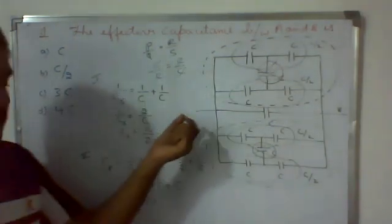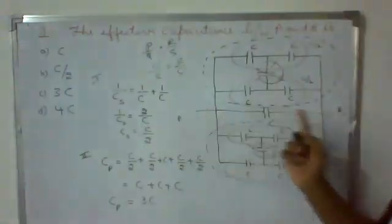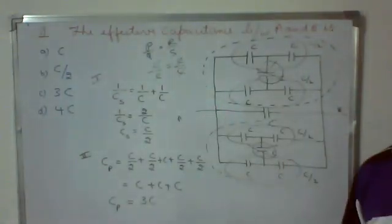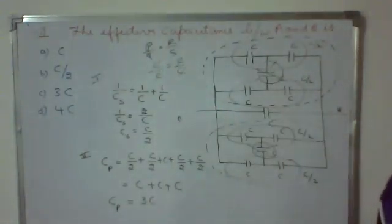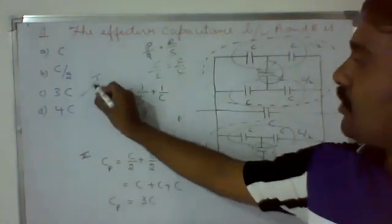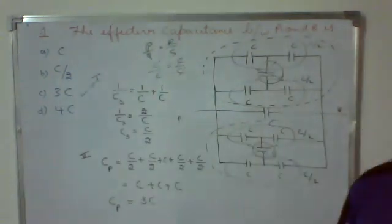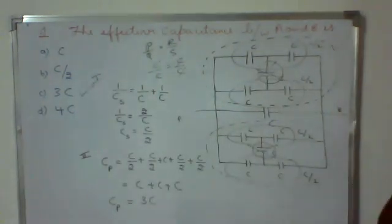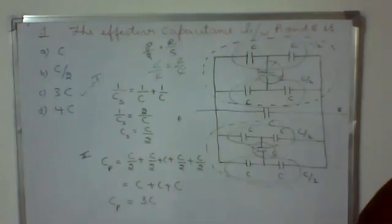So the effective capacitance between the points A and B is 3C. The right answer is option C, that is 3C.